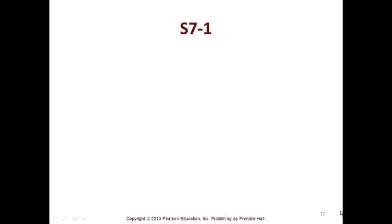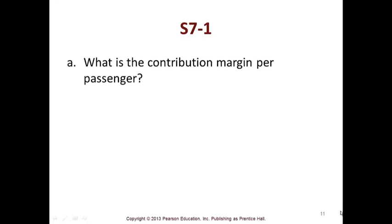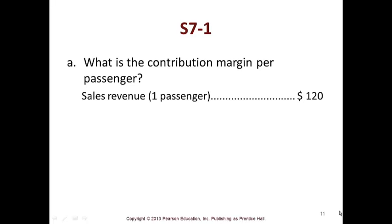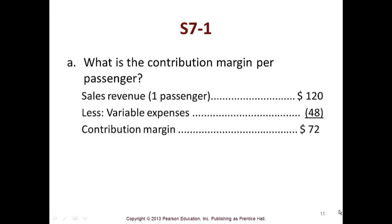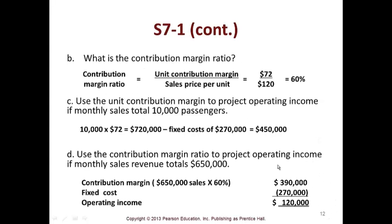Let's look at S7-1 from your book. It's asking what is the contribution margin per passenger — a different example from a service industry. You have sales revenue of $120 per passenger, a variable expense of $48, and a contribution margin per passenger of $72. The contribution margin ratio is 72 divided by 120, which is 60%. Part C says use the unit contribution margin to project operating income if monthly sales are 10,000 passengers. You take 10,000 times $72, which is $720,000, minus fixed cost of $450,000.